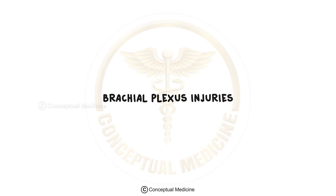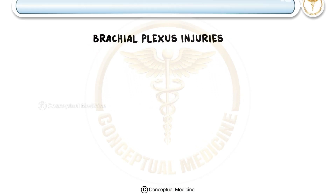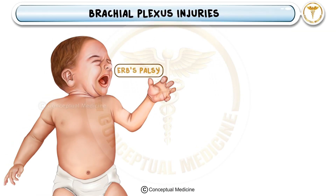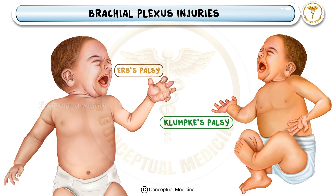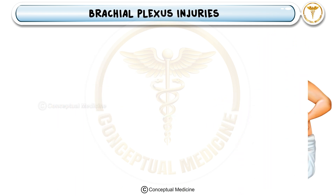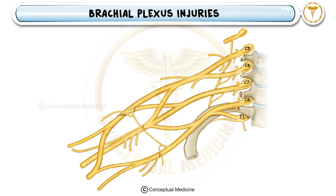Brachial Plexus Injuries: Erb's palsy and Klumke's palsy. In this class, today we're going to talk about brachial plexus injuries. The brachial plexus is a complex network of nerves that controls movement and sensation in the upper limb. Any damage to this network can result in severe motor and sensory deficits.